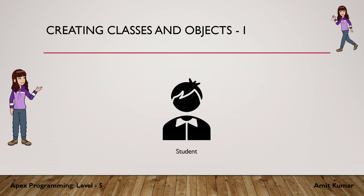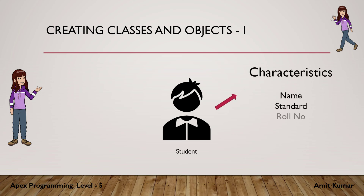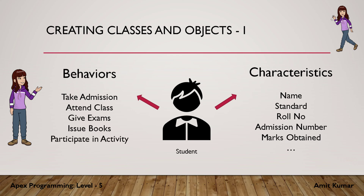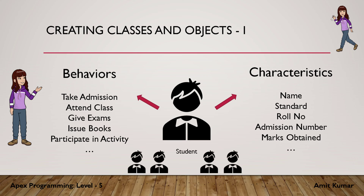For example, a student can be an object for a certain software with characteristics like name, standard, roll number, admission number, marks obtained, etc. It will have certain behaviors like take admission, attend class, give exams, issue books, participate in activities, etc. There can be different numbers of students for the same software — that is, different objects of the student class.